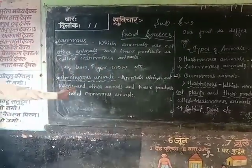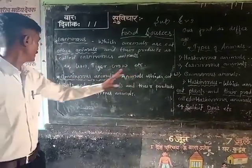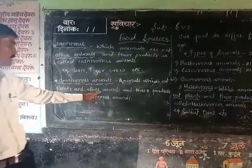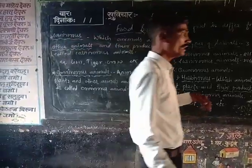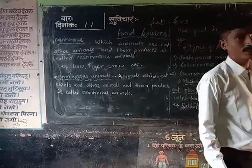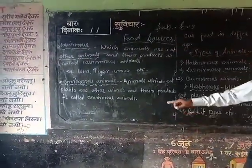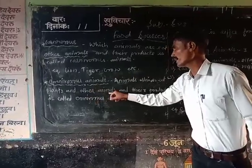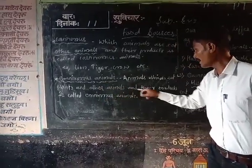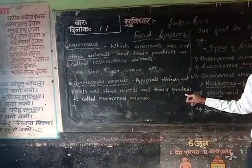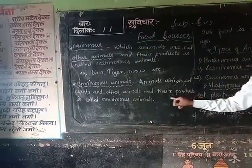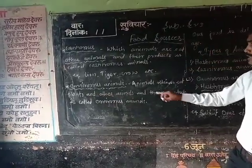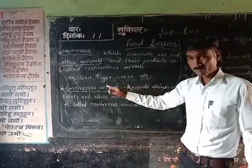So what is the definition? Animals which eat plants and other animals and their products. The most important part of this definition is 'plants and other animals and their products.' This is the most important sentence in this definition.